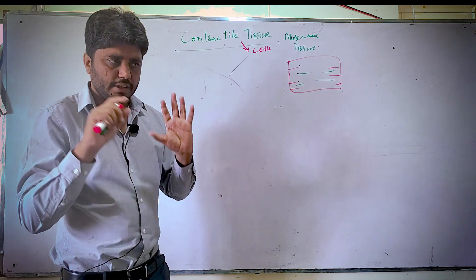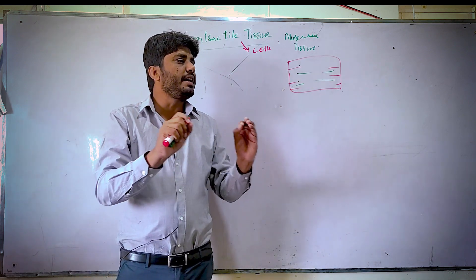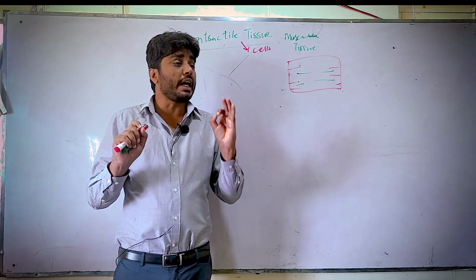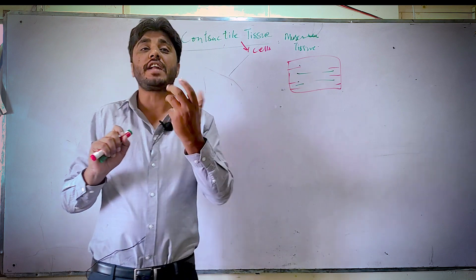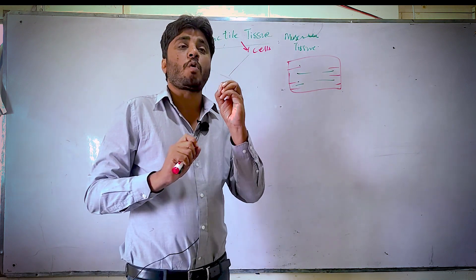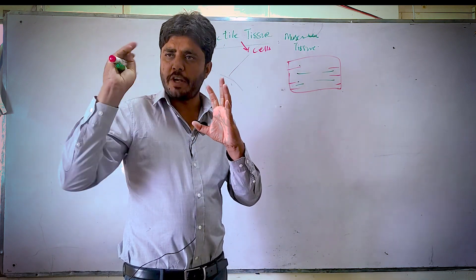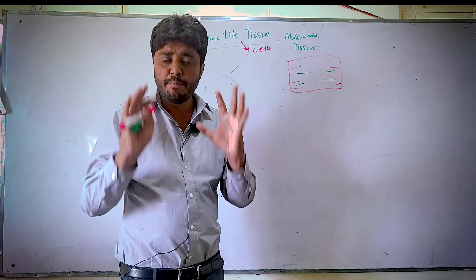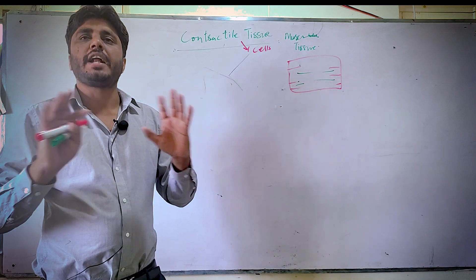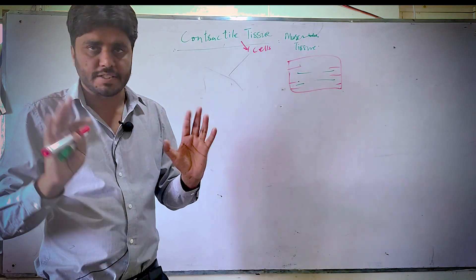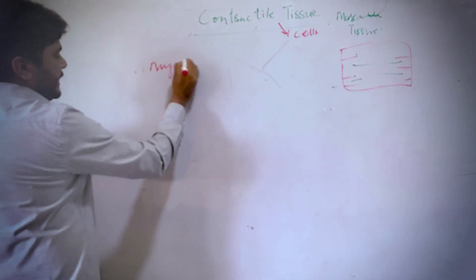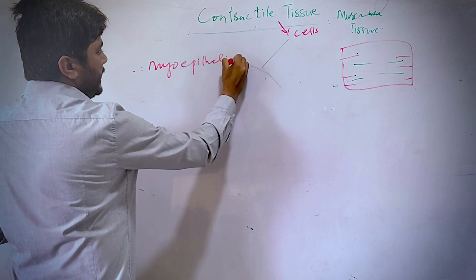Similarly, in your body you will find single cells that may have the ability of contraction. You can call those cells contractile cells. There are three very prominent cells that are still believed to be contractile cells; they are located in different regions and involved in many different functions.